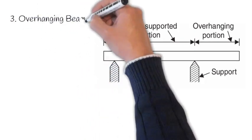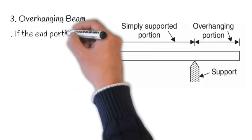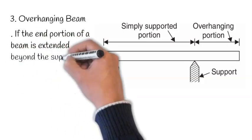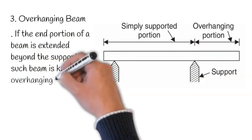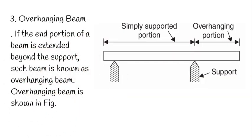3. Overhanging Beam: If the end portion of a beam is extended beyond the support, such beam is known as overhanging beam. Overhanging beam is shown in figure.